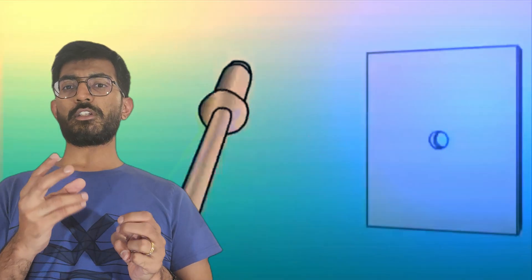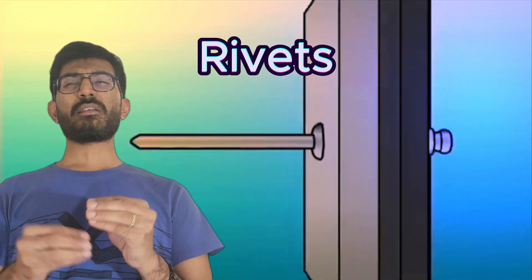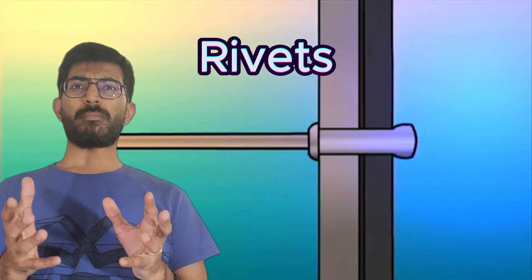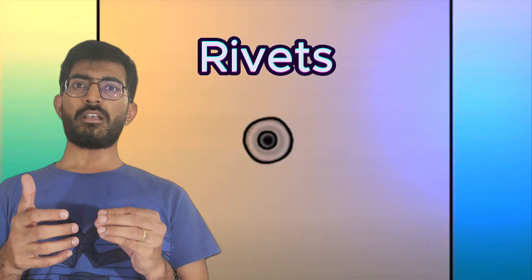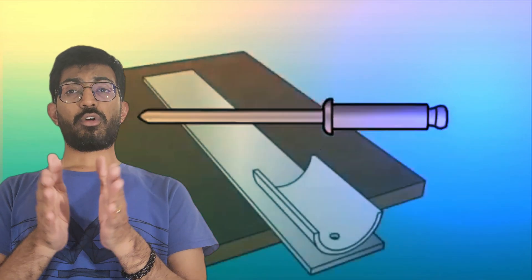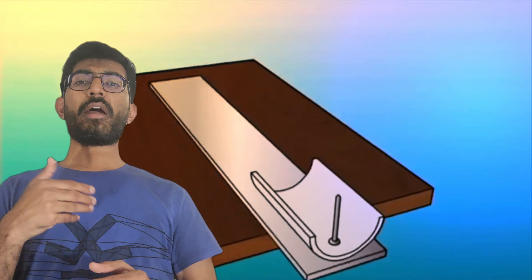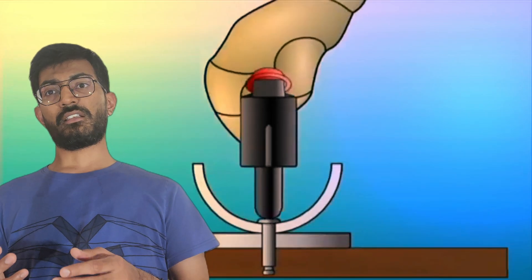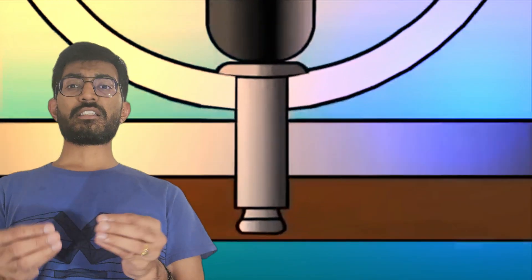Joining method number two is rivets. This is a mechanical fastening method where rivets are used to connect two parts or two layers of material to hold them together. It is a faster and simpler alternative to welding, and it provides a non-permanent joint. It is really important to know which joining method to use when.